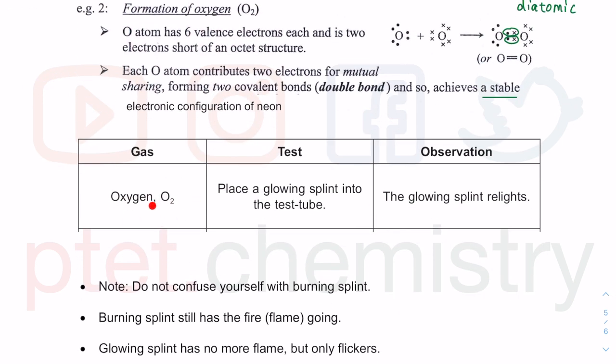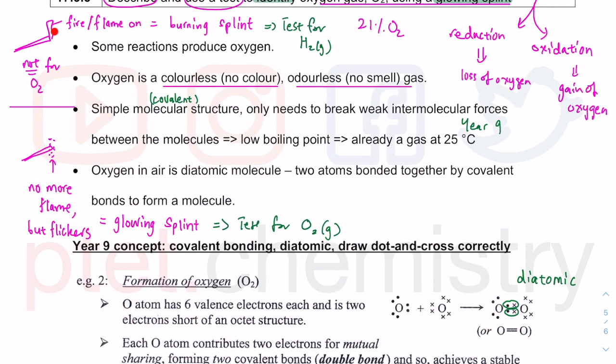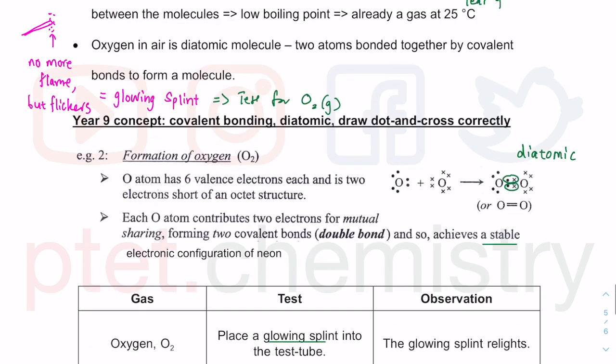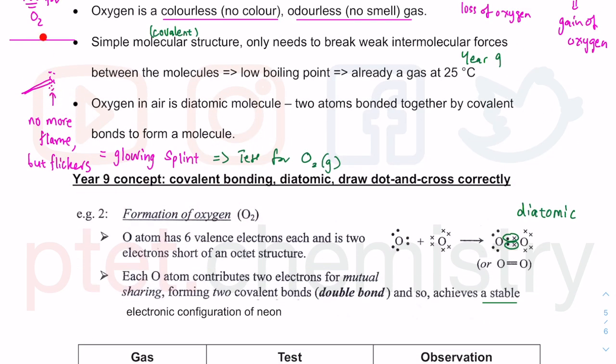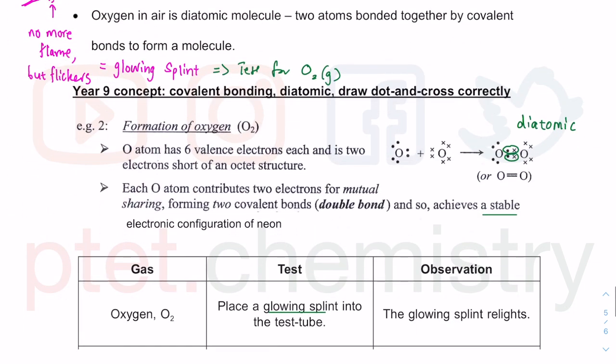What is the gas? Oxygen. What is the test? Glowing splint. Remember, glowing splint is without the flame anymore but with flickers, and it will rekindle or relight. It goes from glowing splint and the flame will spark again because oxygen supports combustion. If you supply oxygen to the flicker, it will turn into flame again - glowing splint relights.